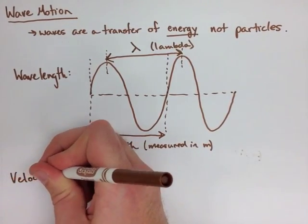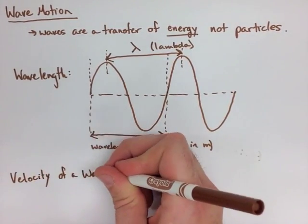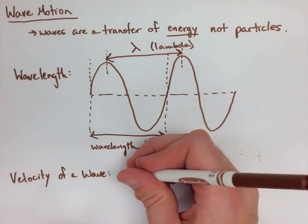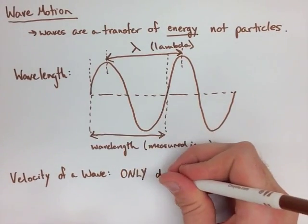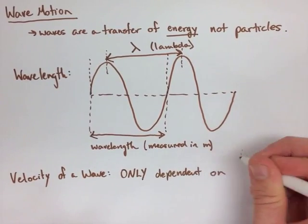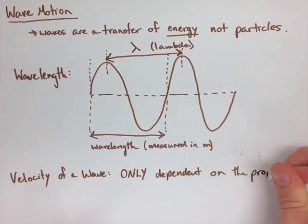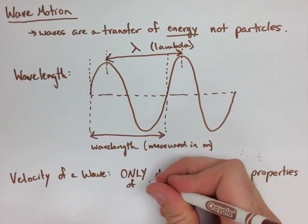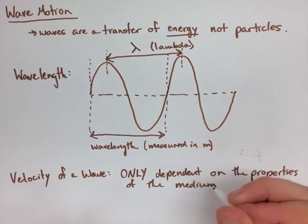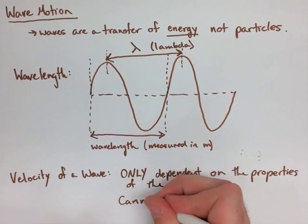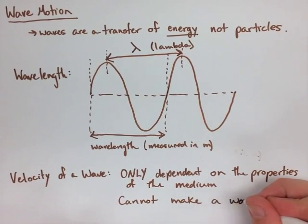Now an important thing about a wave is that the velocity of the wave is only dependent on the properties of the medium that we're traveling through. We can't actually change the speed of the wave to move faster or slower. It changes based on what medium it is in.